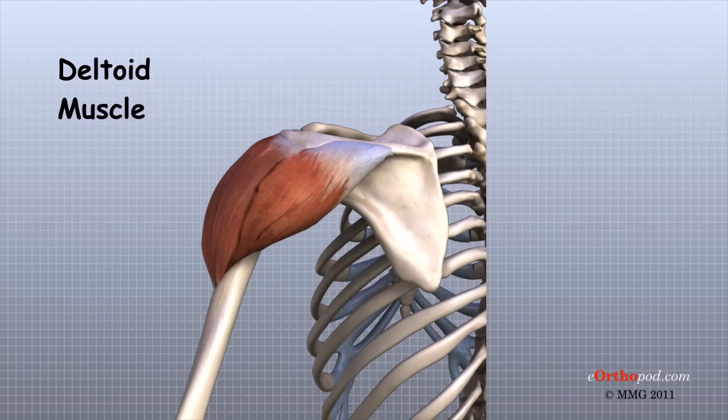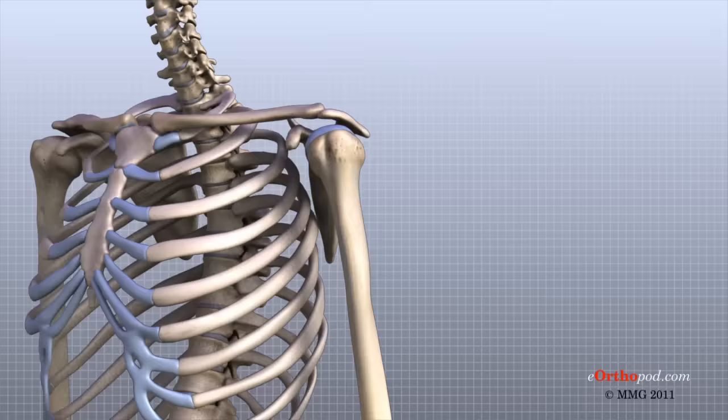The large deltoid muscle forms the outer layer of shoulder muscle. The deltoid is the largest, strongest muscle of the shoulder. The deltoid muscle provides the power to lift the arm once the arm is away from the side.